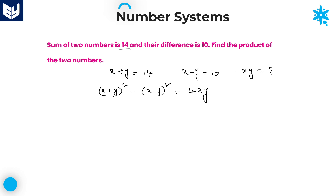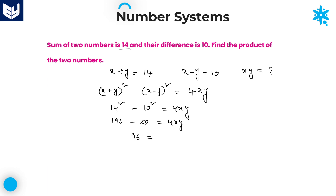Substituting x + y = 14 and x − y = 10 into the expression: 14² minus 10² equals 4xy. 14 squared is 196, and 10 squared is 100, so 196 minus 100 = 96 equals 4xy. Dividing both sides by 4 gives xy = 24. The product of the 2 numbers is 24. That is the required answer.